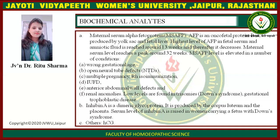Inhibin A is a dimeric glycoprotein produced by the corpus luteum and the placenta. Serum level of inhibin A is raised in women carrying a fetus with Down syndrome.